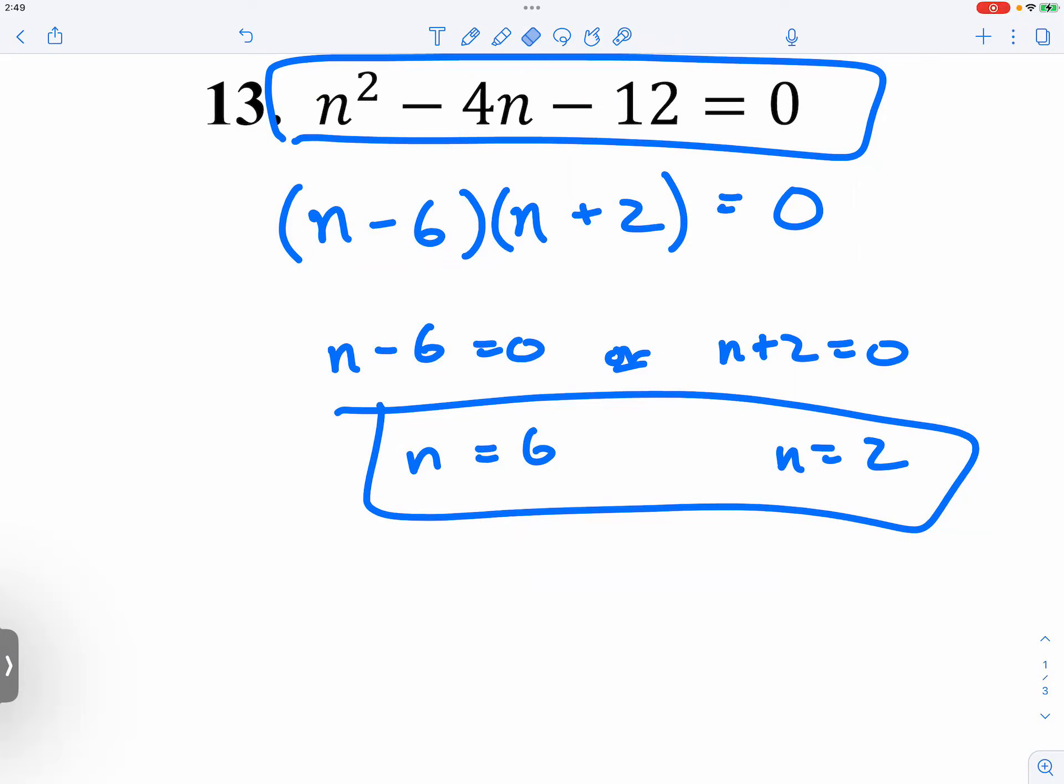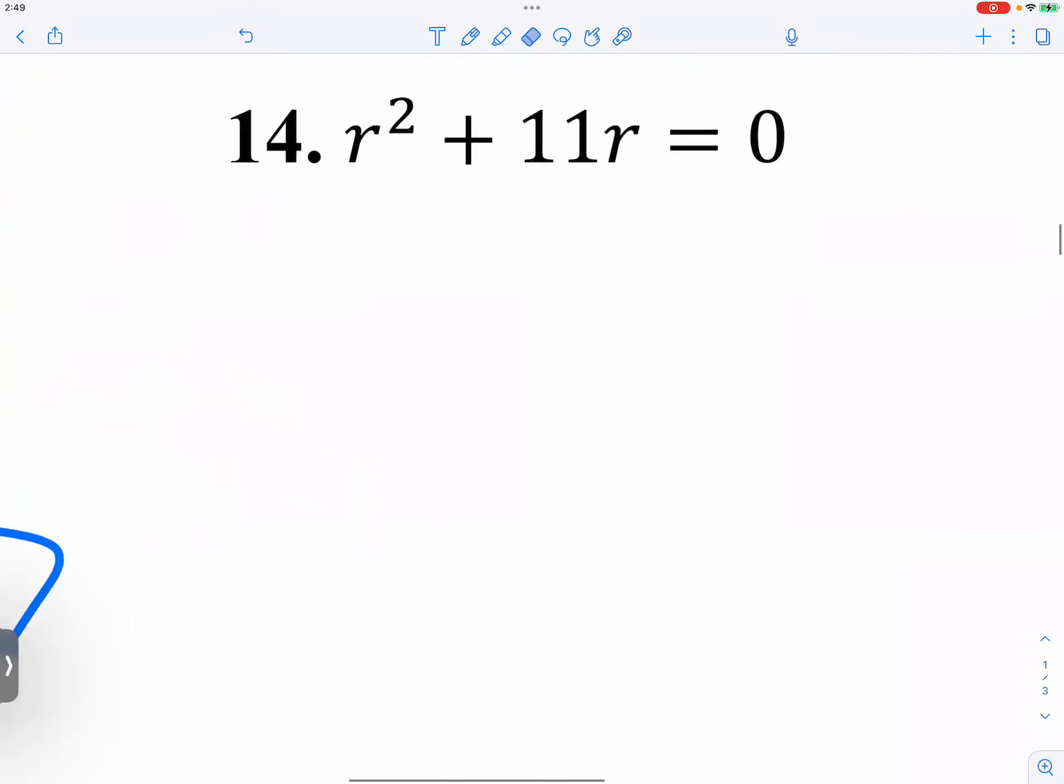And then number 14. Number 14 is challenging in a sense—it's so simple that people, including myself, would not see how easy it is. Because I would freak out when I just see two terms. I'm like, what am I supposed to do? And then it would take me a long while to realize that, oops, they both have r.